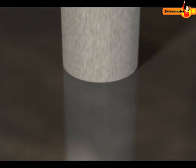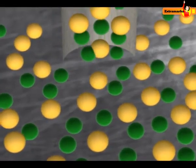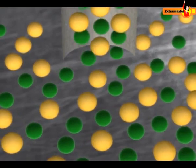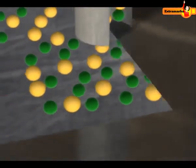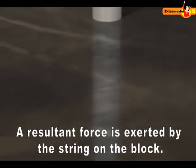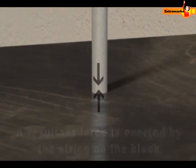Do you know the reason why the block attached to the string does not fall down? The electrons and protons at the lower end of the string exert force on the electrons and protons of the block. Thus, a resultant force is exerted by the string on the block. The block does not fall because of the electromagnetic force attracting between the block and the string.